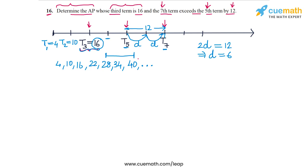Now let's do the same thing in a slightly more algebraic manner. We will assume that the first term of the AP is A and the common difference is D. Now we will make use of these two pieces of information given to us. We are told that the third term is 16, so T₃ is 16.